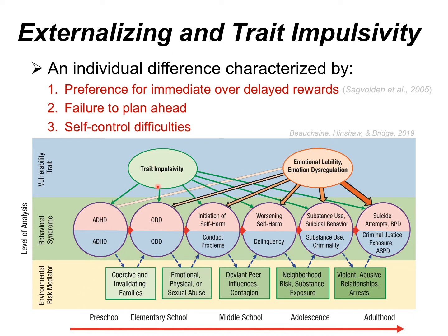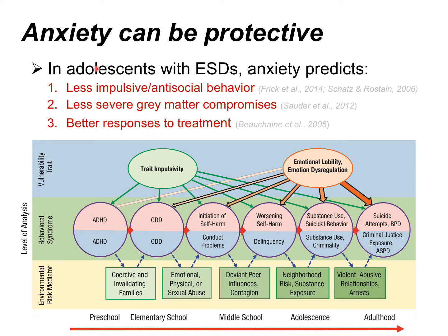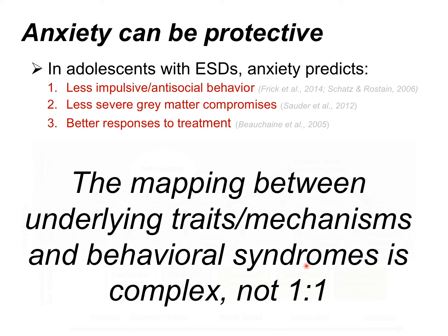In childhood, trait impulsivity often manifests as ADHD, specifically the hyperactive-impulsive presentation. This can develop into further and more severe externalizing disorders depending on the dynamics of one's environment over development. Importantly, anxiety can actually be protective — in children with externalizing disorders, anxiety predicts less police contact, better peer relationships, and better treatment responses. So the mapping between underlying traits and behavioral syndromes is complex, depending on multiple interacting traits and environmental factors.